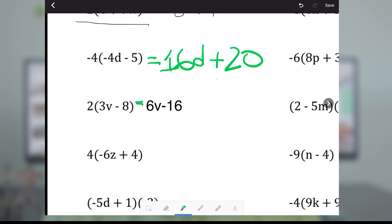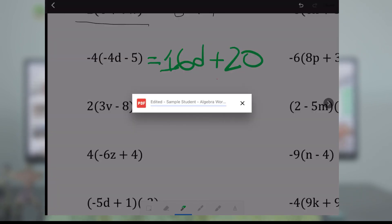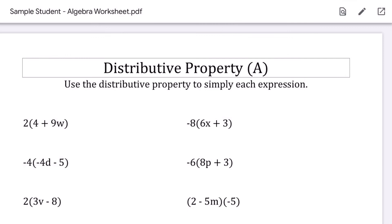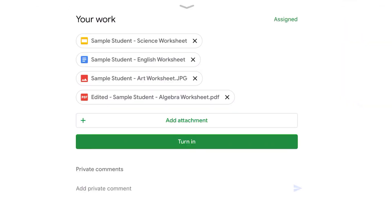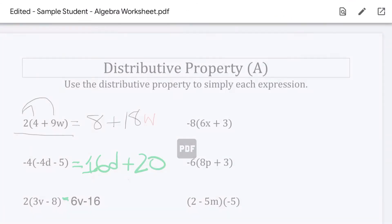Now when I'm done with this, I have to make sure I do this part. I'm going to hit save. And see how it's going to say edited, and it's going to load it for a second? Wait for it to load. Do not exit or press X until it's done. So now, when I go back there, you can see there's an edited sample student algebra worksheet right there, which if I click on, shows my answers.